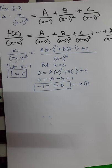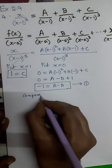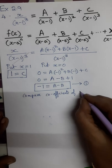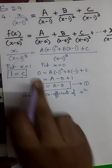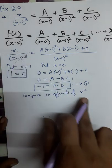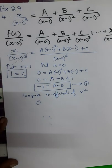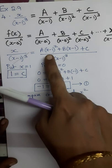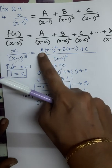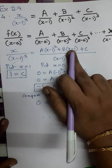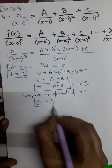We still don't know A and B individually. To find them, let's compare the coefficients of x squared on both sides. There is no x squared term on the left-hand side, so its coefficient is 0. On the right-hand side, expanding A times (x minus 1) squared gives an x squared term with coefficient A. The B and C terms have no x squared. Therefore, A = 0.